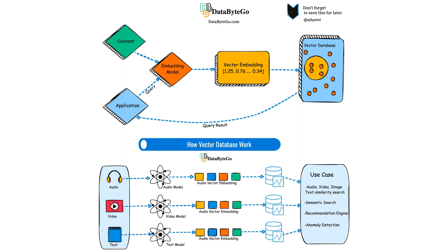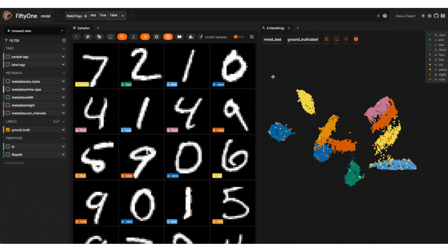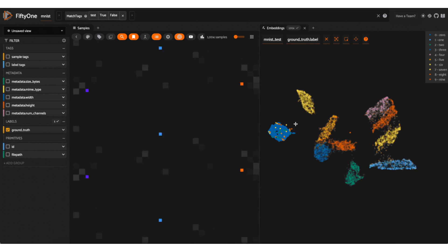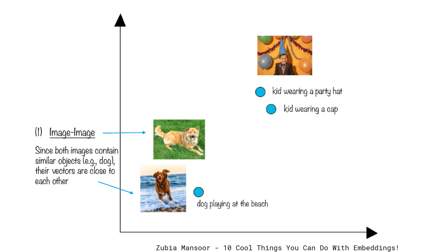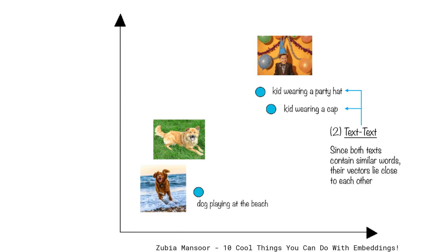Vectors allow you to represent data. Text documents can be represented as vectors. Audio clips can be transformed into vectors based on the different audio features of that clip. You could take an image and convert that into a vector. That will allow you to do some interesting type of clustering, so you can find these semantically similar objects in this high-dimensional space. Vectors representing similar objects or concepts will be closer to each other in this multi-dimensional space.